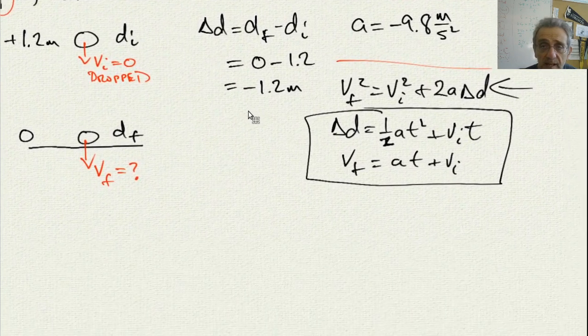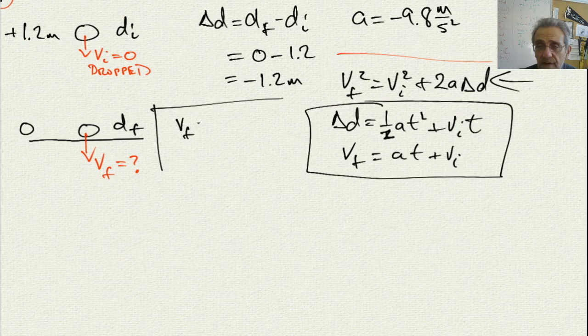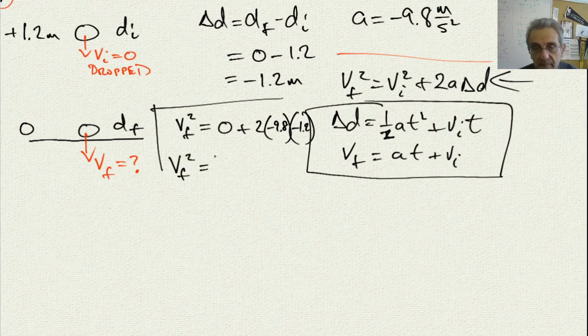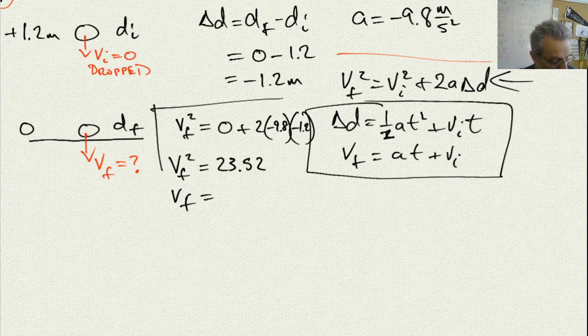And it is already in the correct format, so all I need to do now is plug in my values. So, if I plug my values in for this, I'll get V final squared is equal to 0, because my initial velocity is 0, plus 2 times A, which is negative 9.8, times delta D, which is negative 1.2. Now, notice my negative times a negative is going to give me a positive number. So, my V final squared is going to equal 23.52. Now, that's V squared, so now in order to get that, I need to take the square root of that, and I get 4.85 meters per second. So, that's my answer.